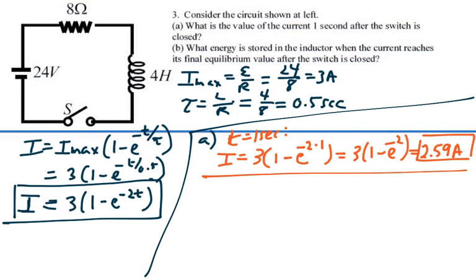What energy is stored in the inductor when the current reaches its final equilibrium value after the switch is closed? So we are not talking about the current at 1 second. We are talking about the current at infinity, which would be our maximum current. So we are going to have our maximum current of 3 amps.